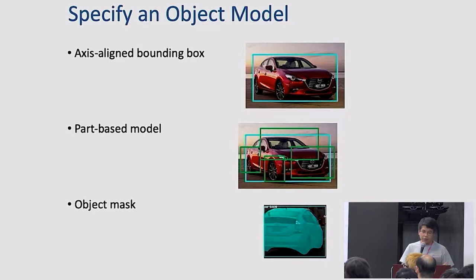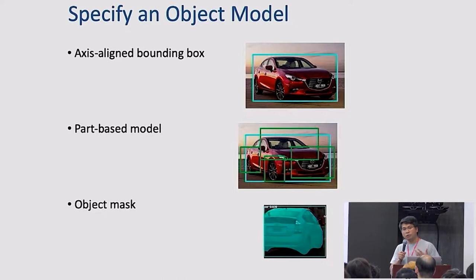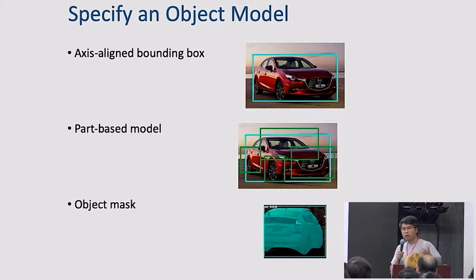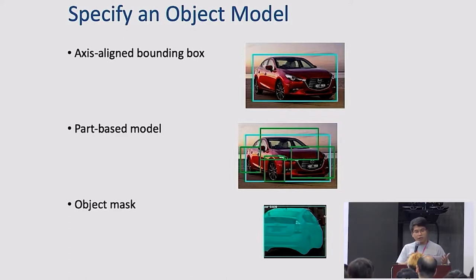A second type of object model is parts-based: you decompose the object into its constituent parts. To recognize a face, you need to detect eyes, nose, and mouth. To detect a bicycle, you need to detect two wheels and the pedal. A more sophisticated model specifies a mask — essentially a binary label inside the bounding box — as the object model.